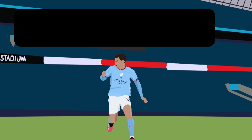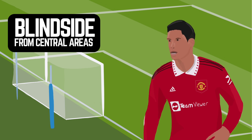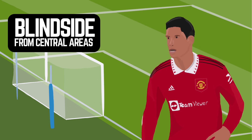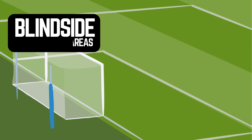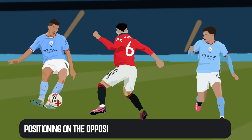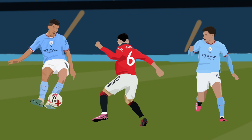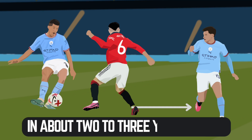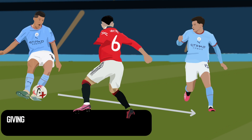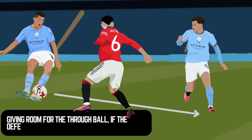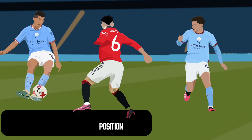This is where you use the blindside in central areas of the pitch. It's again about positioning yourself on the side of the defender that's furthest from the ball. The defender's going to be in a position that makes them uncomfortable - do they press the ball or do they go to you? If you give yourself about two to three yards of space from the defender, it gives you that room to receive the ball or a through ball into your feet. If the defender holds that central ground, you then have two or three yards of space and may potentially be able to run through on goal.